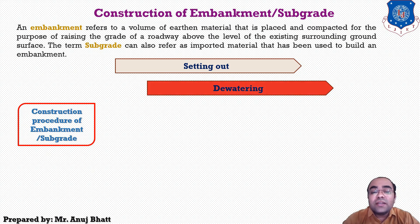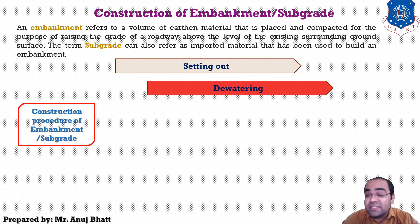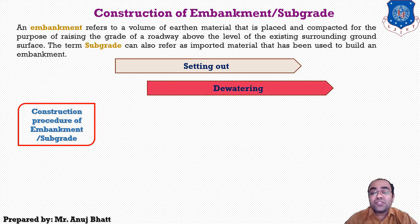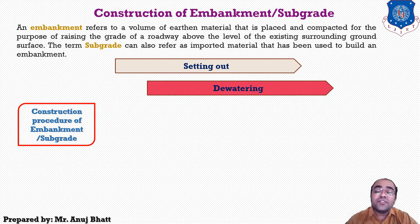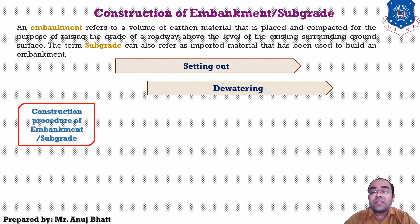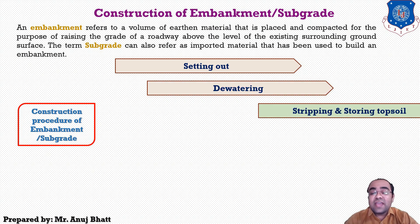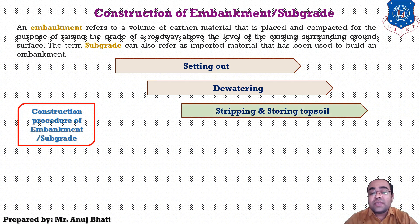During the dewatering process, care shall be taken to discharge the drain water so as not to cause damage to that particular work area. It should not damage crops or any other properties in the surrounding area. That is the dewatering process. After dewatering, the next step that should be followed is stripping and storing the topsoil.